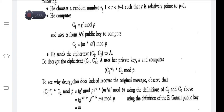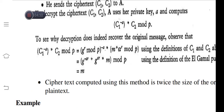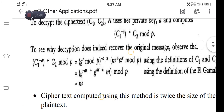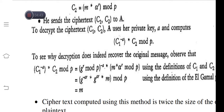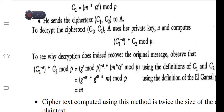A computes c1^(−a) × c2 mod p. We can expand this equation: the value of c1 is g^r mod p, so c1^(−a) equals (g^r)^(−a). This is then multiplied with c2.